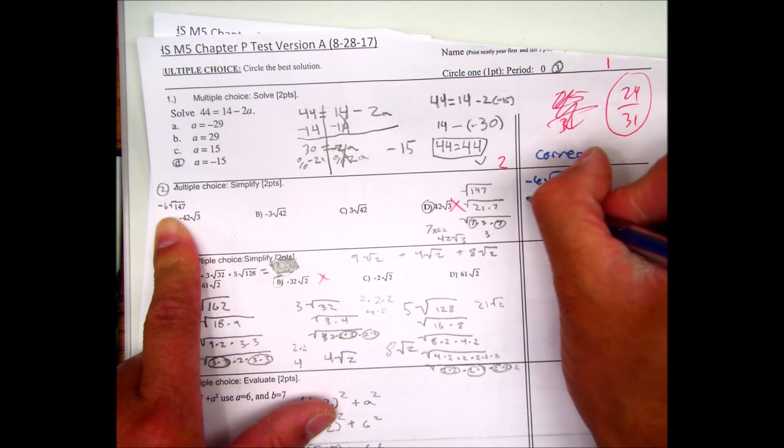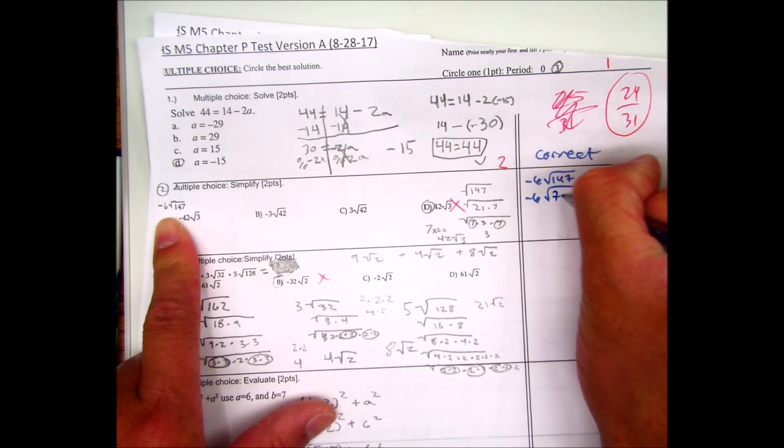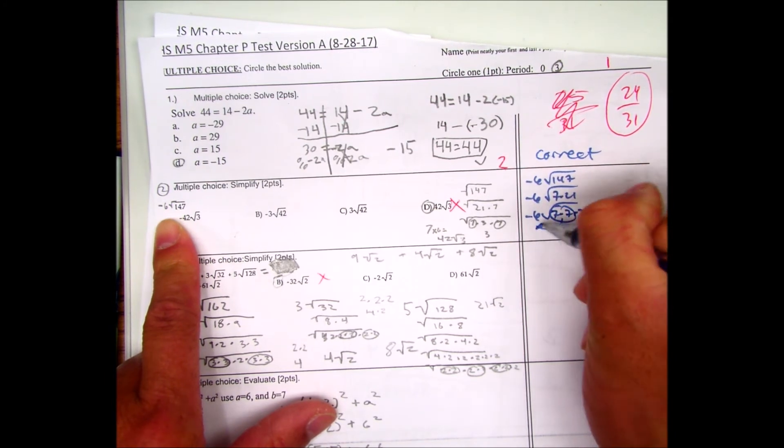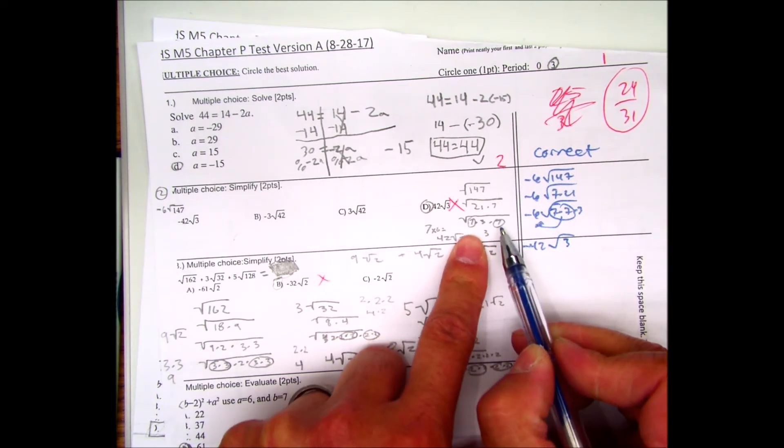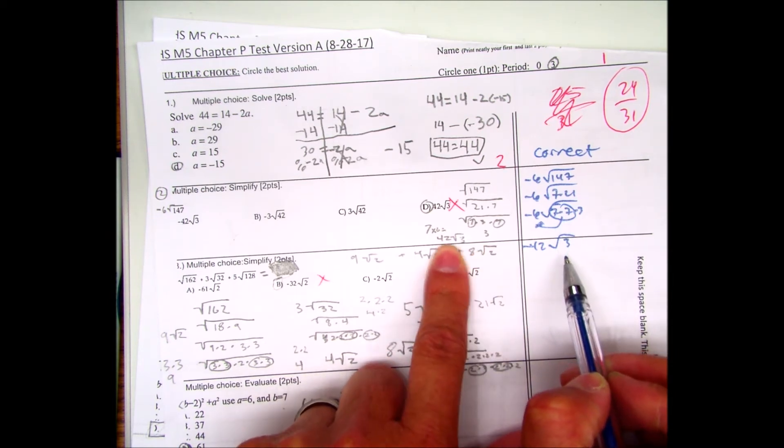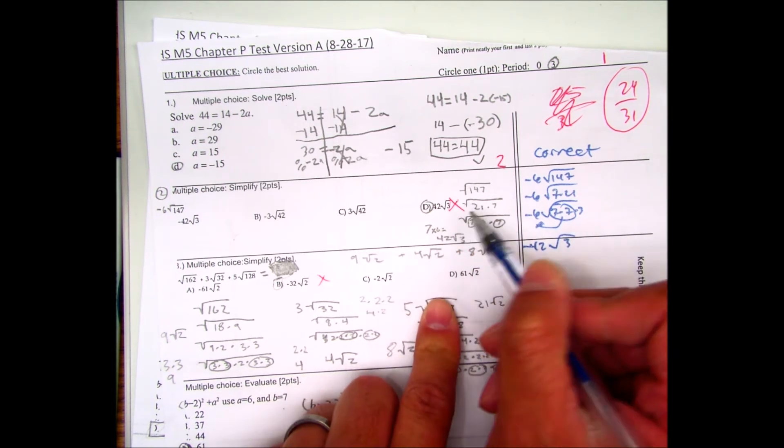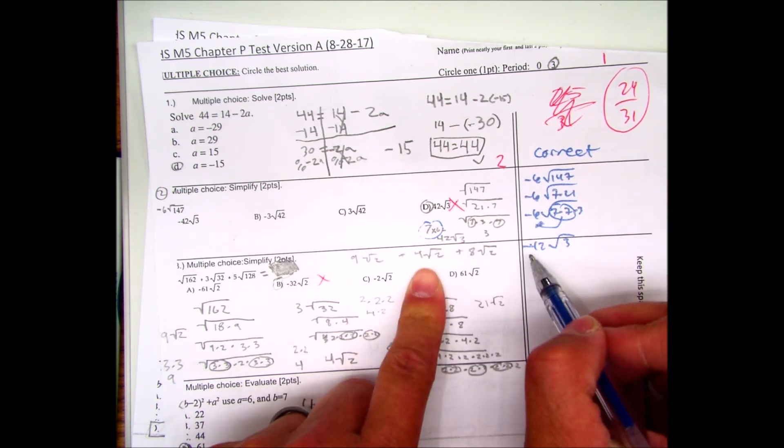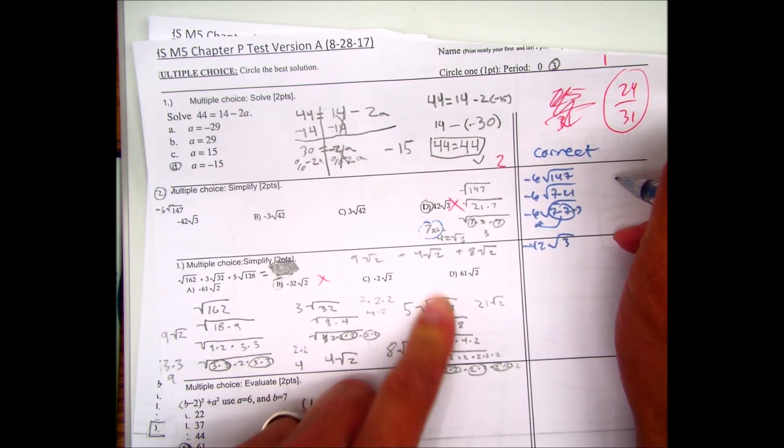You can break that down to negative 6 times 7 times 21. Negative 6, 7, 7 times 3, pull out the 7s. So the student circled a pair of 7s. They left a 3 there. They didn't multiply, but they forgot that a positive times a negative. So write a sentence of why you got it wrong.